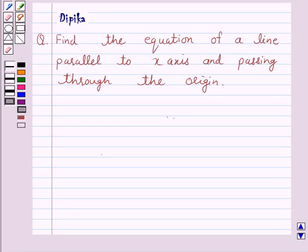Hello and welcome to the session. I am Deepika. Let's discuss a question which says find the equation of a line parallel to x-axis and passing through the origin. Now we know that a line is uniquely determined if it passes through a given point and has given direction.